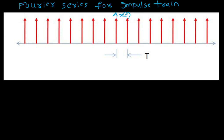Let's find the Fourier series for an impulse train. Let's say this is x(t) — an impulse train where all signals have unit area. The time axis runs from 0 to T, and this point is minus T/2 and this point is plus T/2.